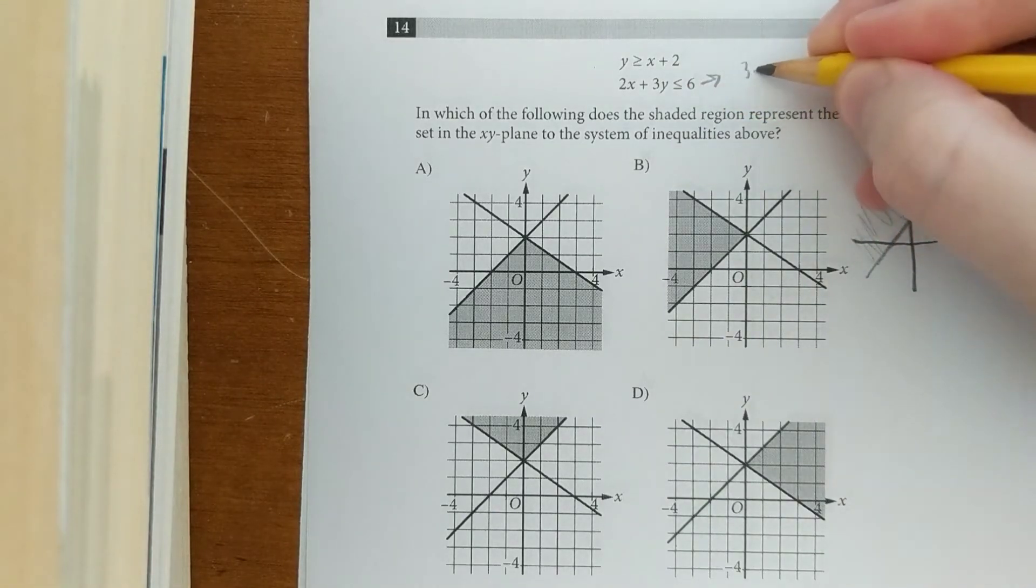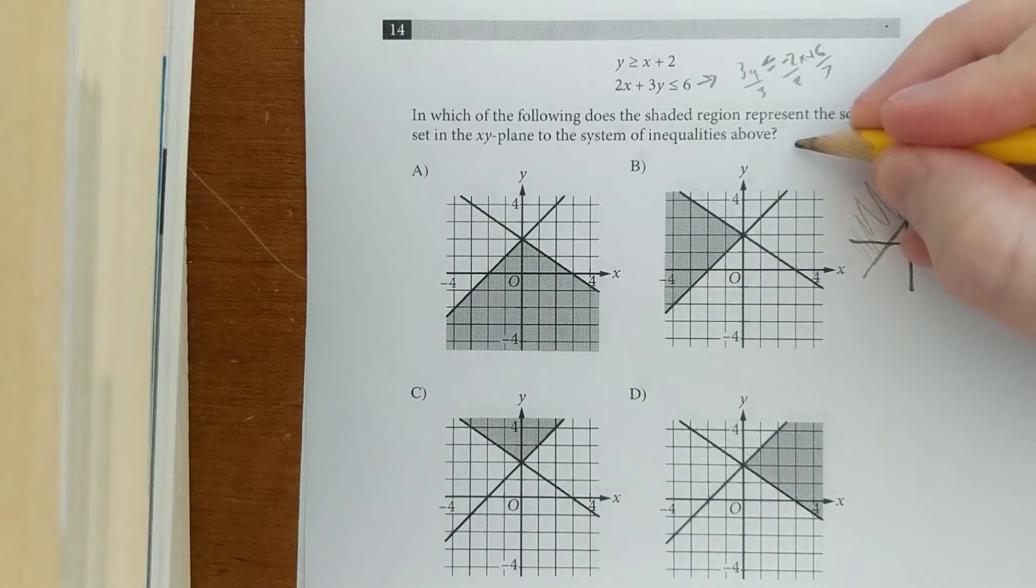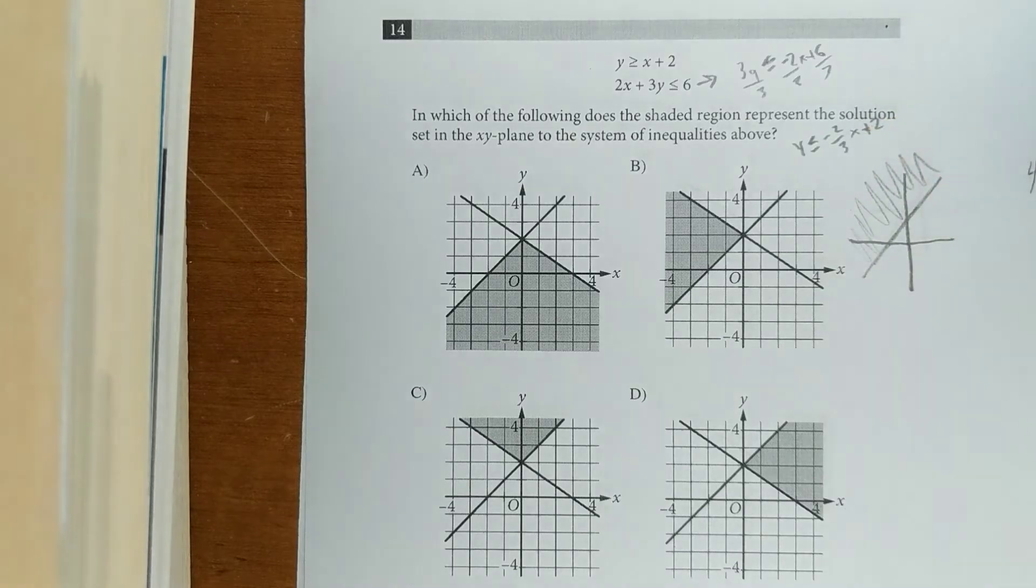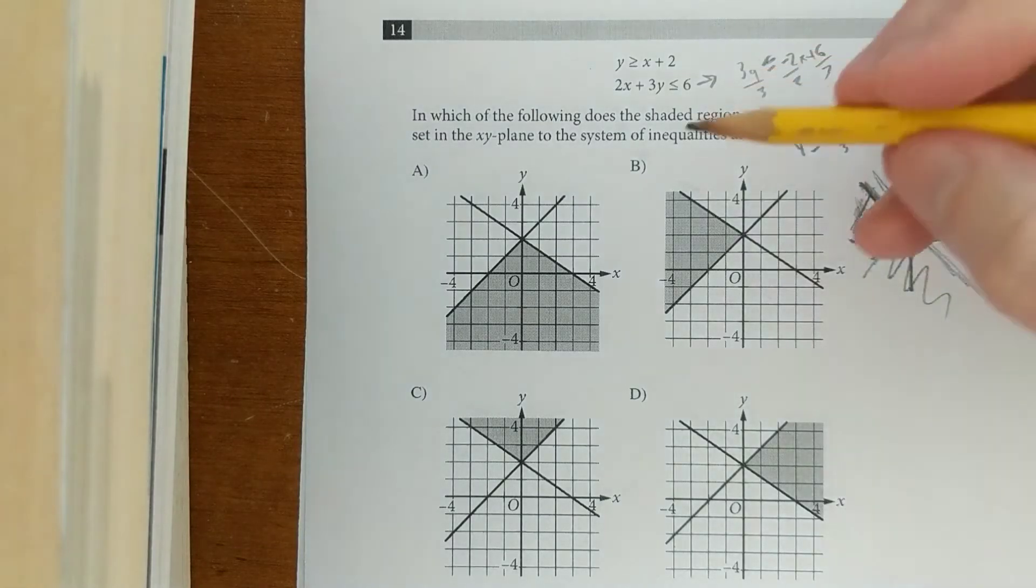This one, maybe we can just rewrite it really quickly. So 3y less than or equal to negative 2x plus 6. Divide everything by 3. You're going to get y is less than or equal to negative 2/3 x plus 2. So that's a negative slope and still a positive y-intercept. So it's going to be something like this. And this time it's less than or equal to, so it's shaded below. That means we're looking for something that just has this area shaded where there's overlap. You can see that's B.